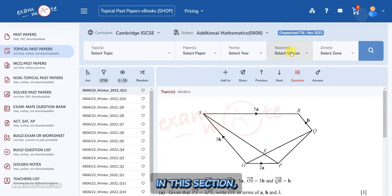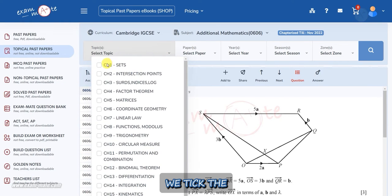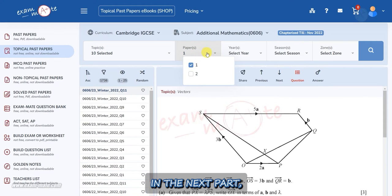In this section, there are filters for your convenience in choosing questions. First, we tick the desired topics. Then, select papers. In the next part, we tick the desired years.